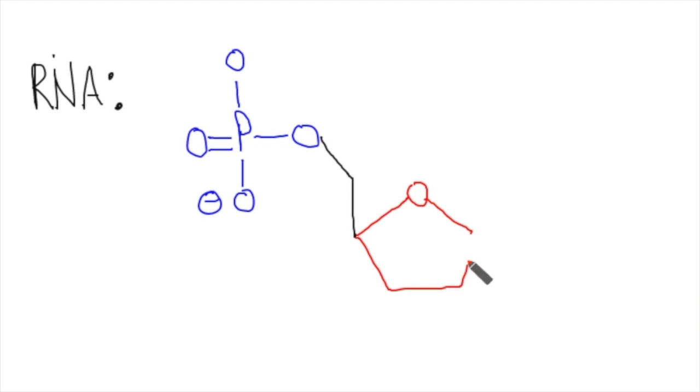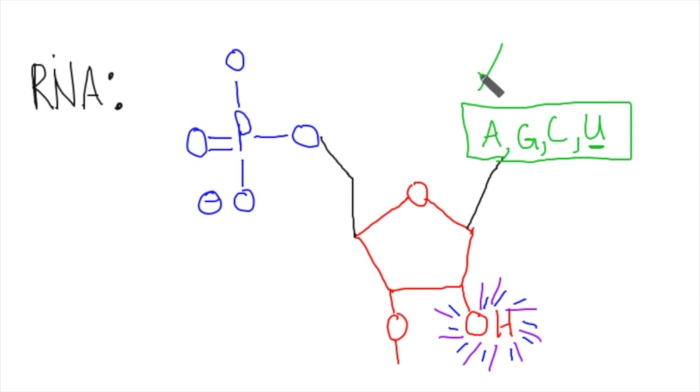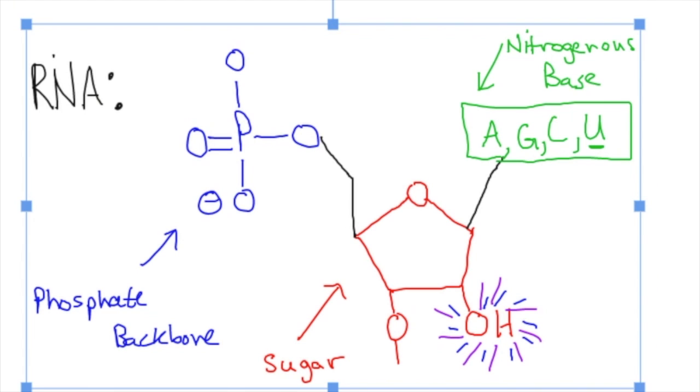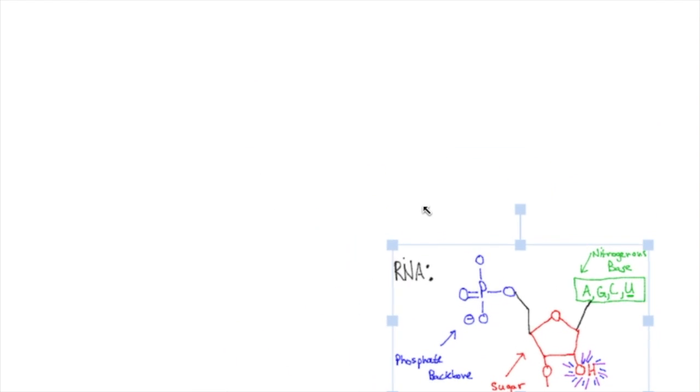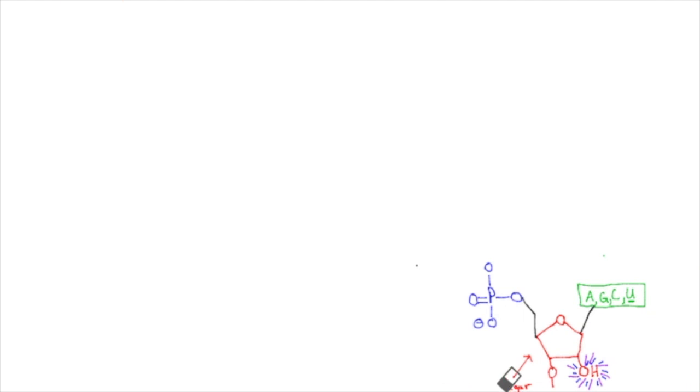On to RNA. RNA has the same three basic parts of the structure that are the same as DNA, which is the phosphate backbone, again shown here in blue. The ribosugar, shown in red. Pay special attention to that OH, which is different from DNA because it is an OH instead of an H. And the nitrogenous basis, again, shown here in green. Notice that this isn't A, G, C, T, but rather A, G, C, U. So RNA doesn't have a T, but instead has a U, which we'll go over in more detail here in a second.